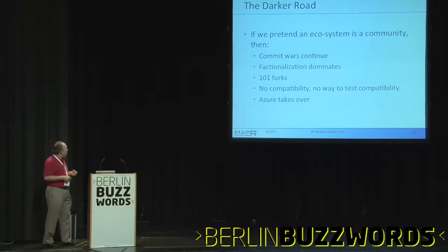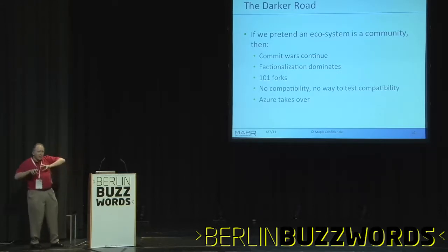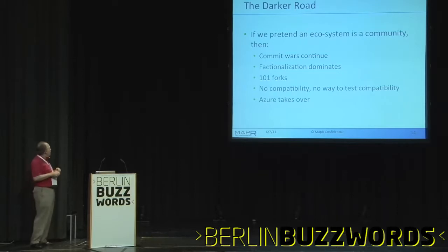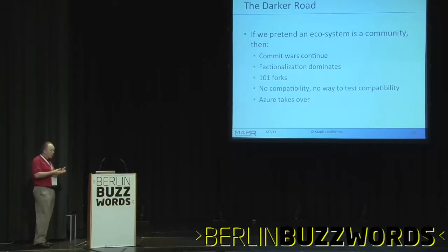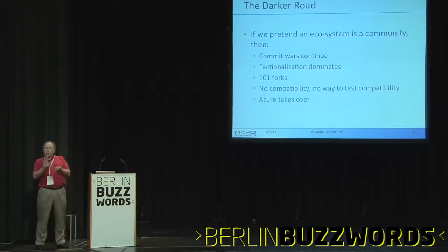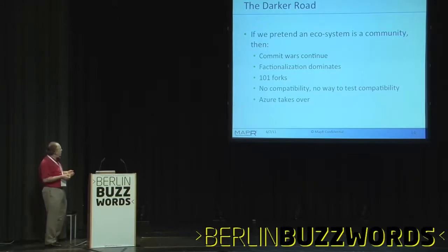If commit wars continue — if people say 'no, you can't put that in there because it's not mine,' or factionalization where someone holds back stuff and inserts it at the last minute — or if there are 101 forks: how many Apache releases of Hadoop are there now? How many commercial versions derived from Hadoop? We don't even know anymore. There is either no compatibility or there's no way to test compatibility. There's no reasonable answer to that.